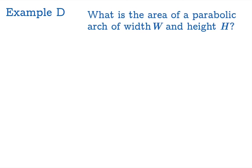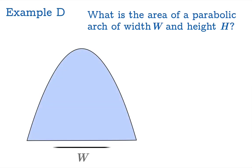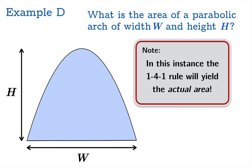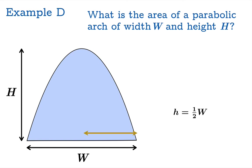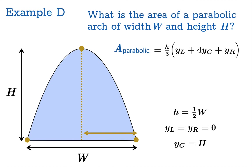Let's finish with an enlightening example. What is the area of a parabolic arch of width w and height h? In this instance the 1-4-1 rule should yield the actual area, because we're finding the area under a quadratic graph — the quadratic approximation matches it exactly. The half width is w/2, the function values at the two endpoints are both zero, and the center function value is h, the height of the arch. So this is not an approximation; the 1-4-1 rule gives the exact area.